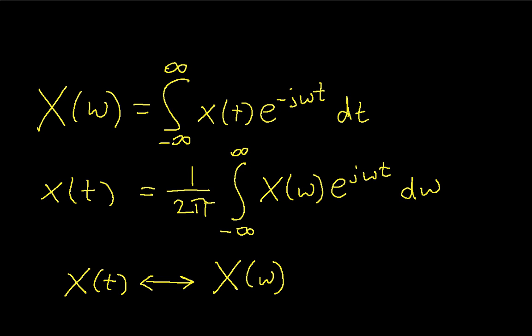This first line is the Fourier transform. It takes a signal x of t, which is a time domain signal, and converts it into x of omega, which is the Fourier transform of this time domain signal.